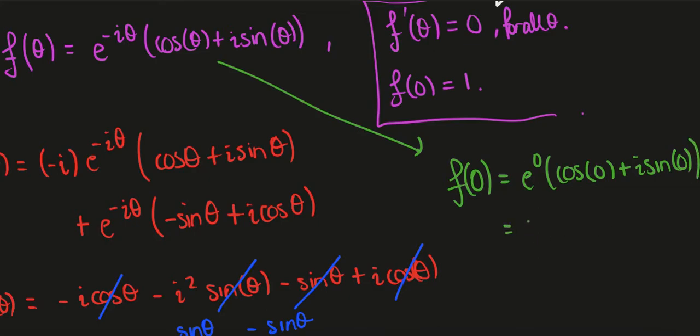e to the 0 is 1 of course, so we'll have 1 times cos of 0 being 1, sin of 0 being 0, and that's 1.